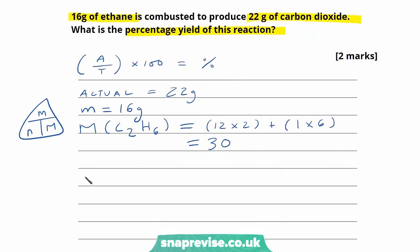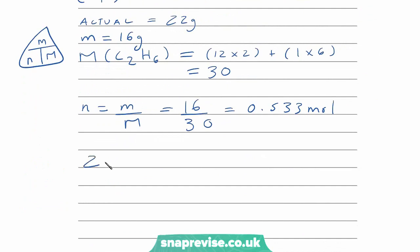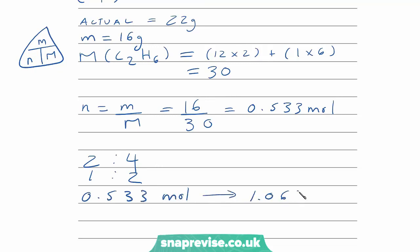We can see that the number of moles = mass ÷ molar mass, as shown in the reaction triangle. So that's 16 ÷ 30 = 0.533 moles of ethane. Looking at the equation and the molar ratios, 2 moles of ethane will produce 4 moles of carbon dioxide — that's a 2 to 4 ratio, which simplifies to 1 to 2. So if we have 0.533 moles of ethane, we're going to produce 1.066 moles of CO₂ — we're producing twice as much.